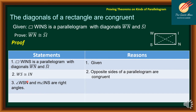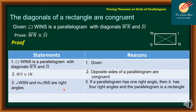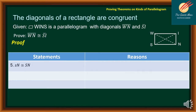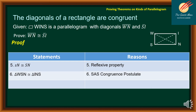Statement 3: angles WSN and INS are right angles — reason: if a parallelogram has one right angle, then it has four right angles and the parallelogram is a rectangle, based on Theorem 1 on rectangle. Statement 4: angle WSN is congruent to angle INS — reason: all right angles are congruent. Statement 5: SN is congruent to SN — reason: reflexive property. Statement 6: triangle WSN is congruent to triangle INS — reason: SAS congruence postulate. Statement 7: line segment WN is congruent to line segment SI — reason: corresponding parts of congruent triangles are congruent.